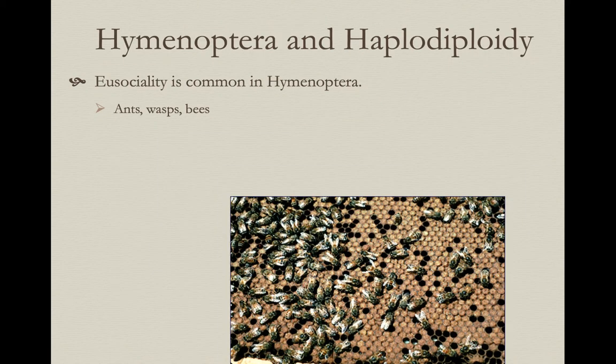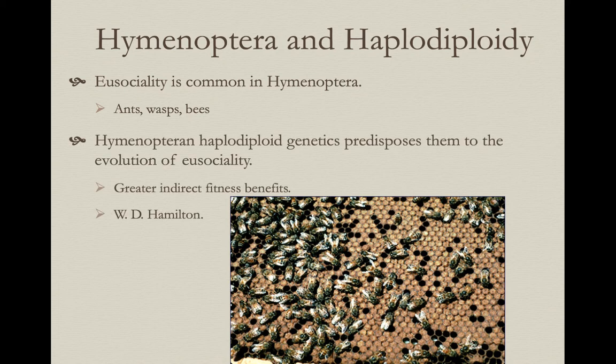Eusociality is really common in the Hymenoptera — ants, bees, and wasps. They have this haplodiploidy genetic system, which may predispose them to eusociality because it alters the degrees of relatedness between individuals involved in the colony, or at least some of the individuals. W.D. Hamilton was the first to link this genetic system to the potential reason why eusociality is so common in the Hymenoptera.